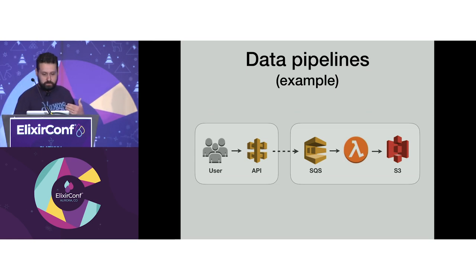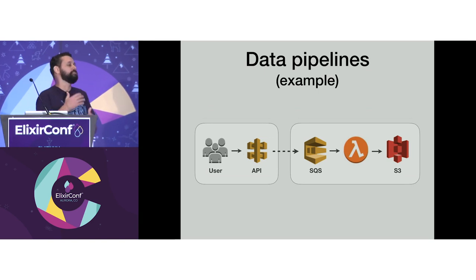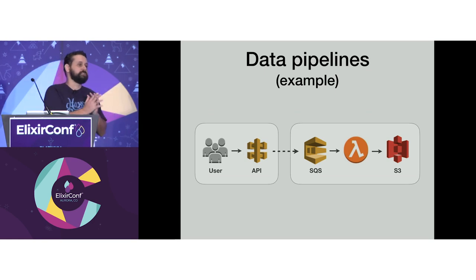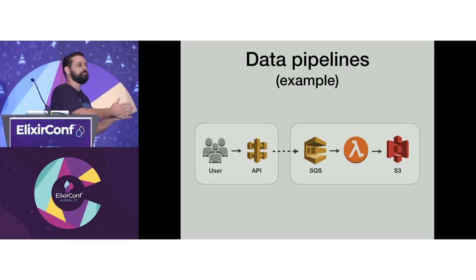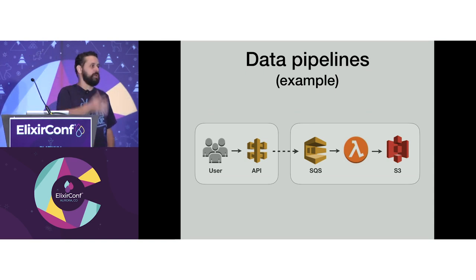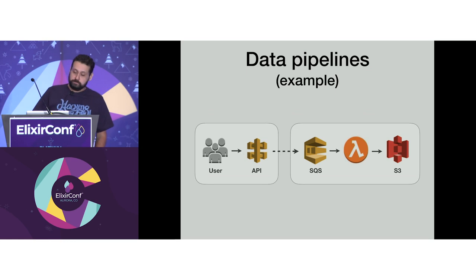A better approach would be, instead of using your main endpoint, to use a separate endpoint and just send that data to a queue — it could be SQS, RabbitMQ, Kafka, whatever you need.